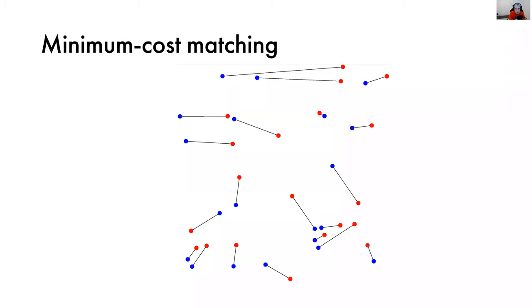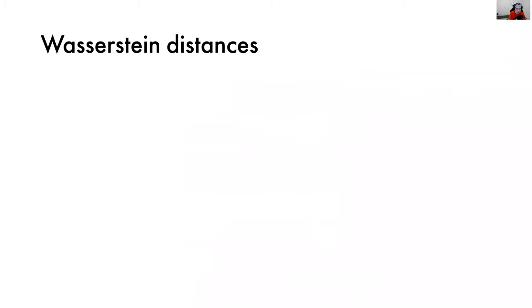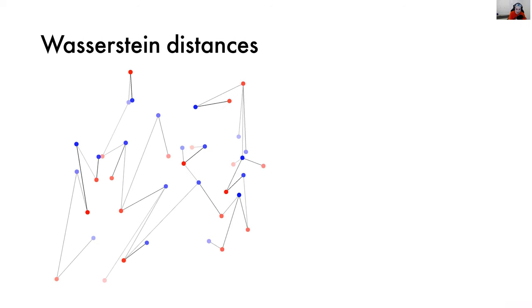Now let me slightly generalize and relax the problem to make it on one hand easier, and on the other hand more useful. This setup is called Wasserstein distances, also called optimal transport, also called Earth Mover's distance for certain regimes. Basically there are many names depending on which branch of science or mathematics you are coming from. This is a generalization of minimum cost matching, and the generalization is twofold: we don't require our sets of points to have equal size, and moreover we now put some distribution over red points and some distribution over blue points, rather than equal weight on each point.